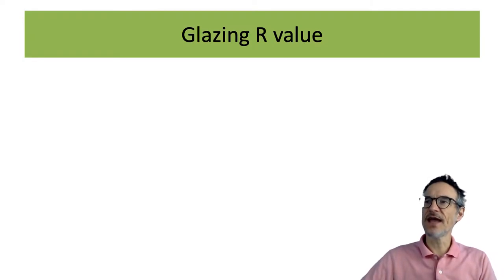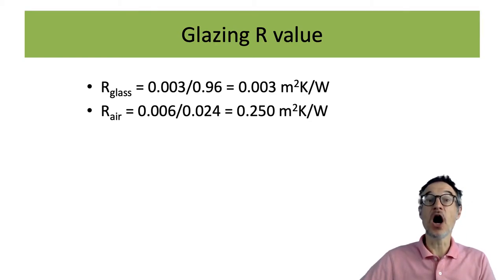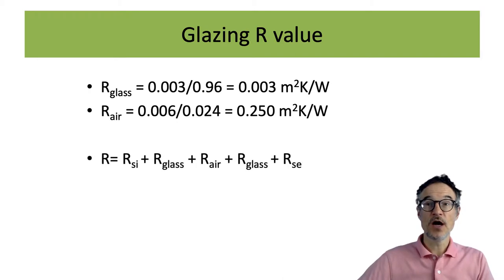So let's look at the glazing then. That's the glass, three millimeters of glass, the resistance, the R value, and the R value of the air is six millimeters. And we can add this together to get the R value for the glazing, the glass part of the window. We can also put the surface resistance in there.